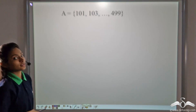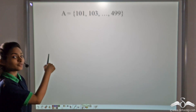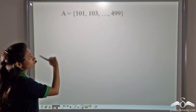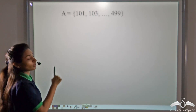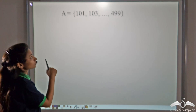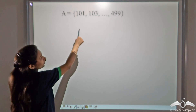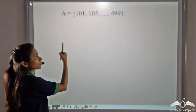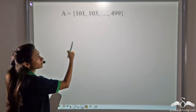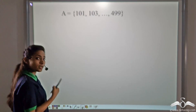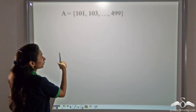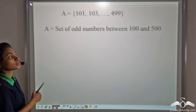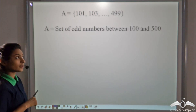Now, what about this set? Can you identify what it wants to denote? 101, 103 and so on till 499. If you observe, these are odd numbers between 100 and 500. 101, 103 is an odd number till 499. 499 is also an odd number. So we can say that set A is the set of odd numbers between 100 and 500.